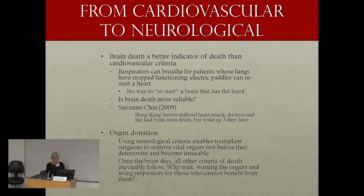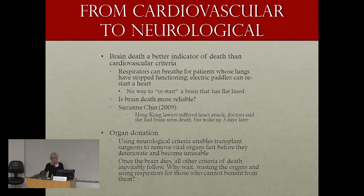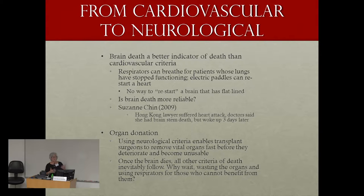If you use the cardiovascular criteria you may waste all of these organs. Defenders of brain death have also said that once the brain dies, everything else — all the other criteria — inevitably follows; the heart and lungs are going to permanently cease. So why must we wait, wasting the organs and using life support for people who are never going to come back? There's a utilitarian argument about organ donation that comes up in the question of how to determine what death is.